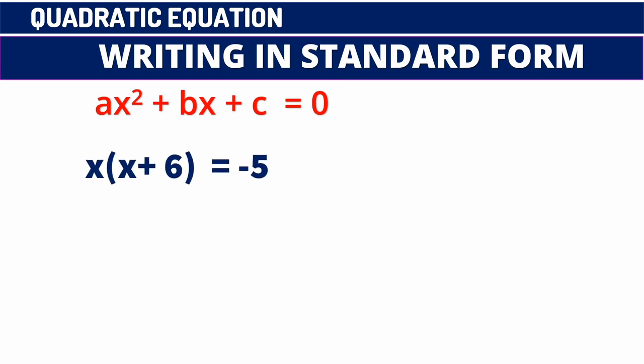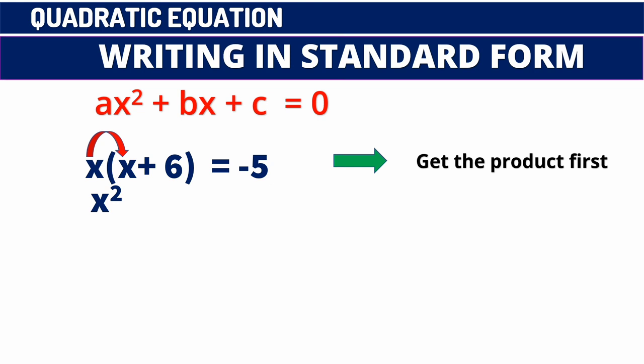Let's have another example: x(x + 6) = -5. How do we write this in standard form? We need to get the product first by applying the distributive property of multiplication. We distribute x to our binomial: x times x equals x², and x times 6 equals 6x. So we have x² + 6x = -5.